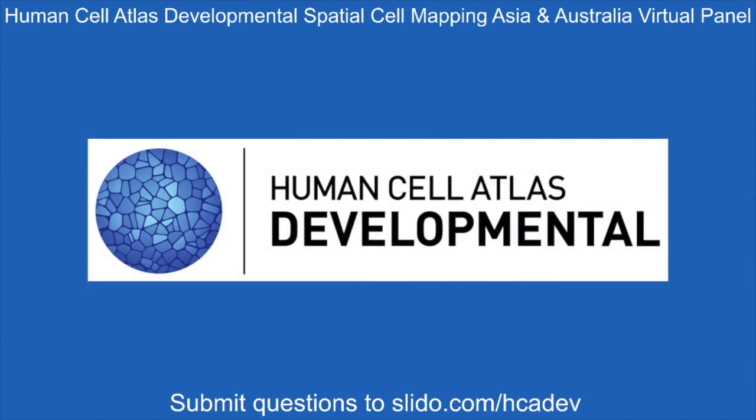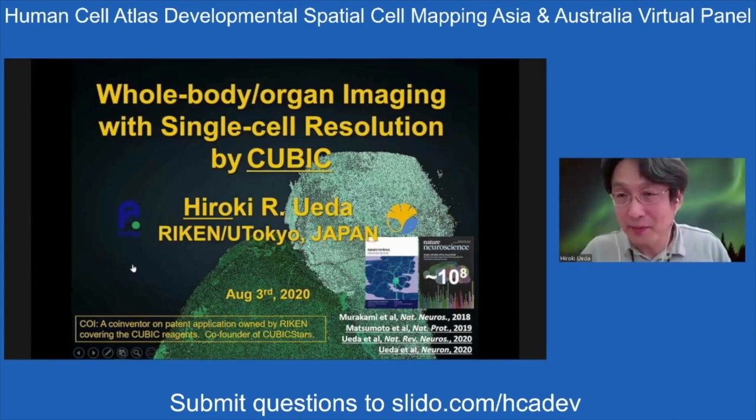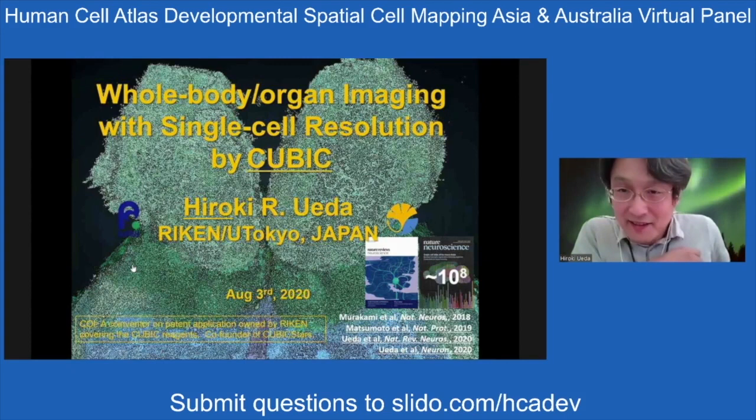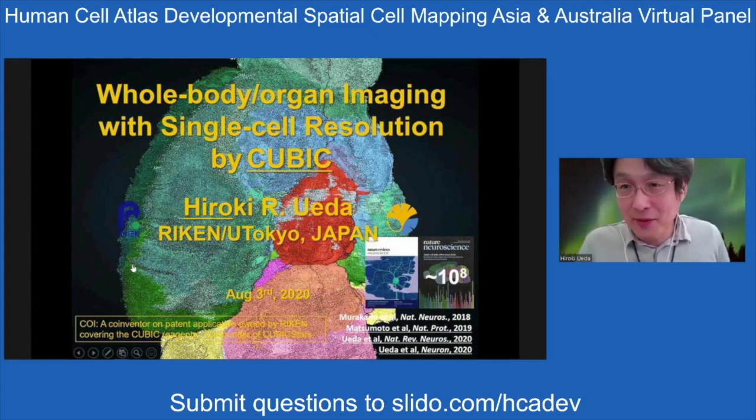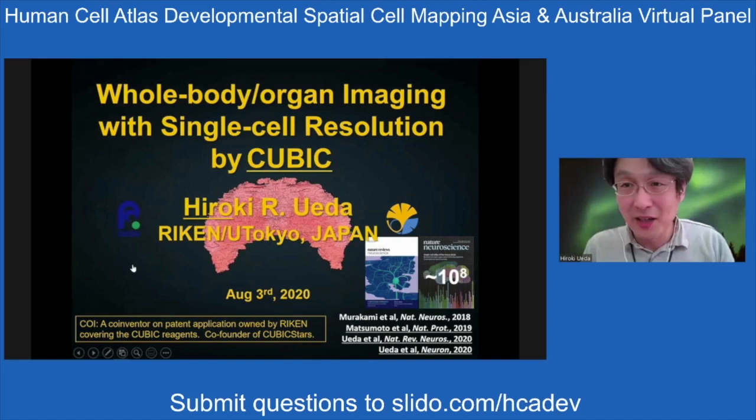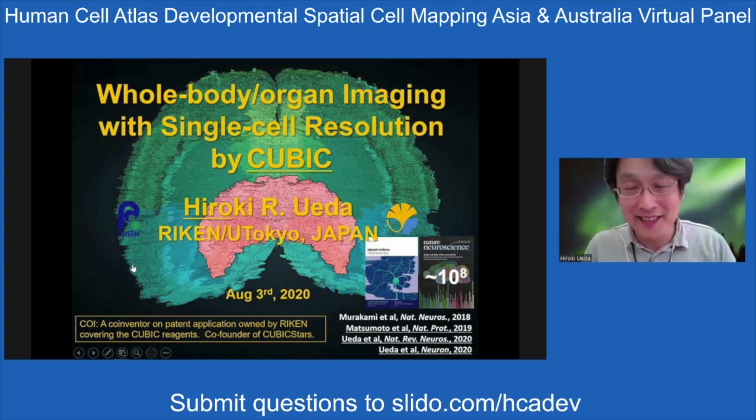Let me share my screen. Thank you. My name is Hiroki Ueda — please just call me Hiro. Today I briefly introduce a hydrophilic tissue clearing technique called CUBIC (C-U-B-I-C). Using this technique, you can make a single-cell resolution three-dimensional address of mice, rat, marmoset, and probably human brain.